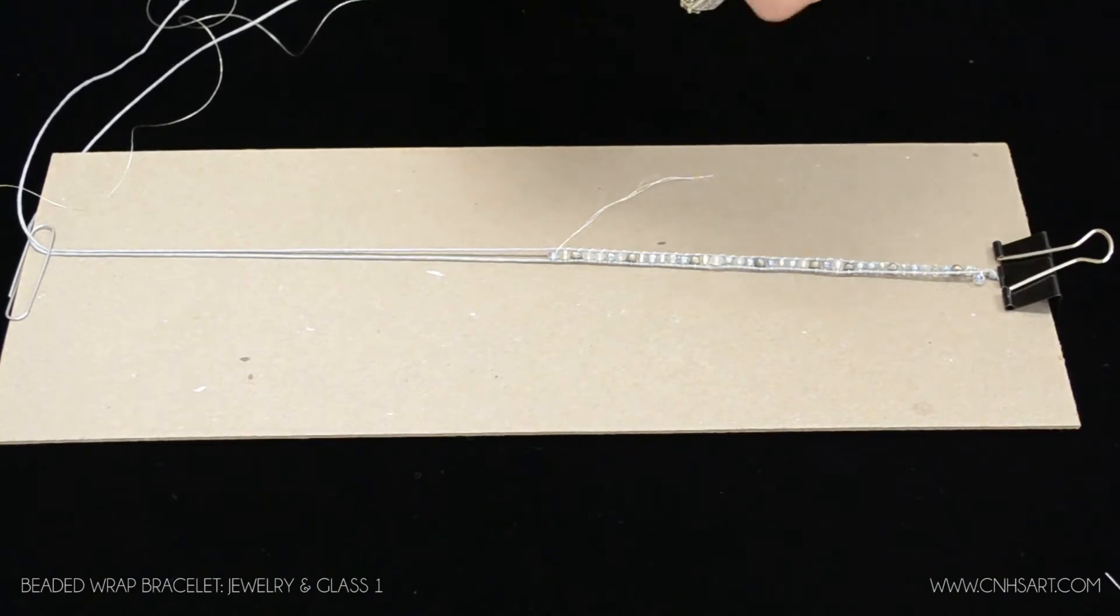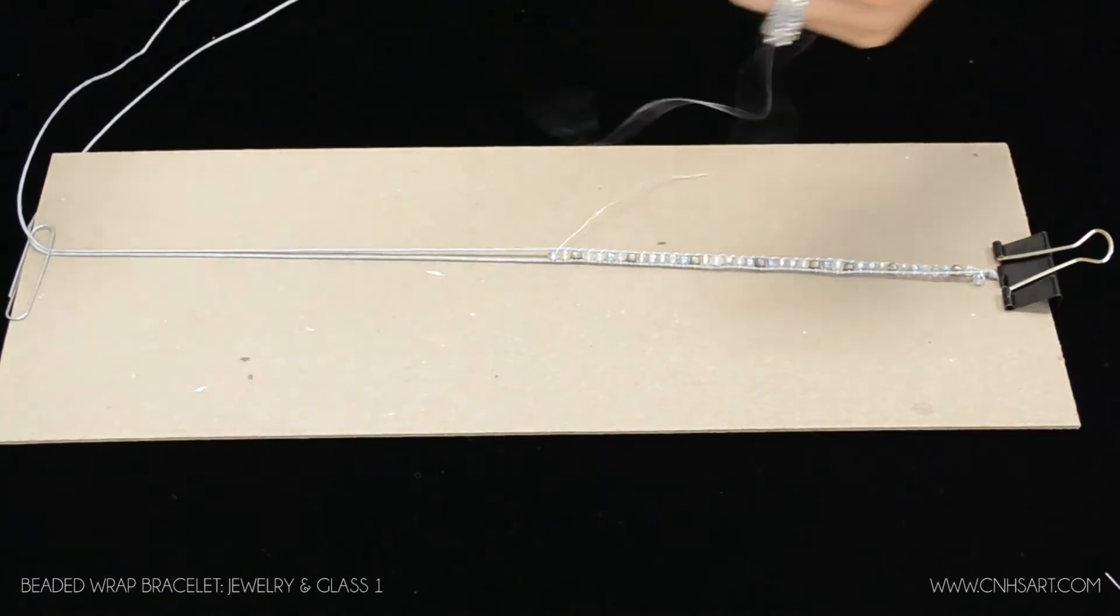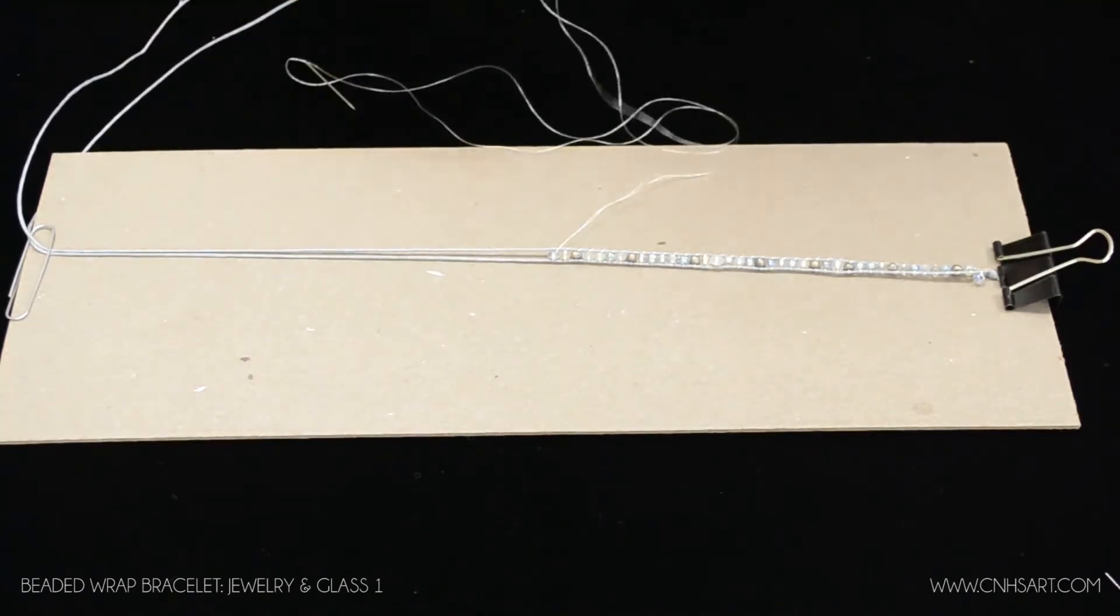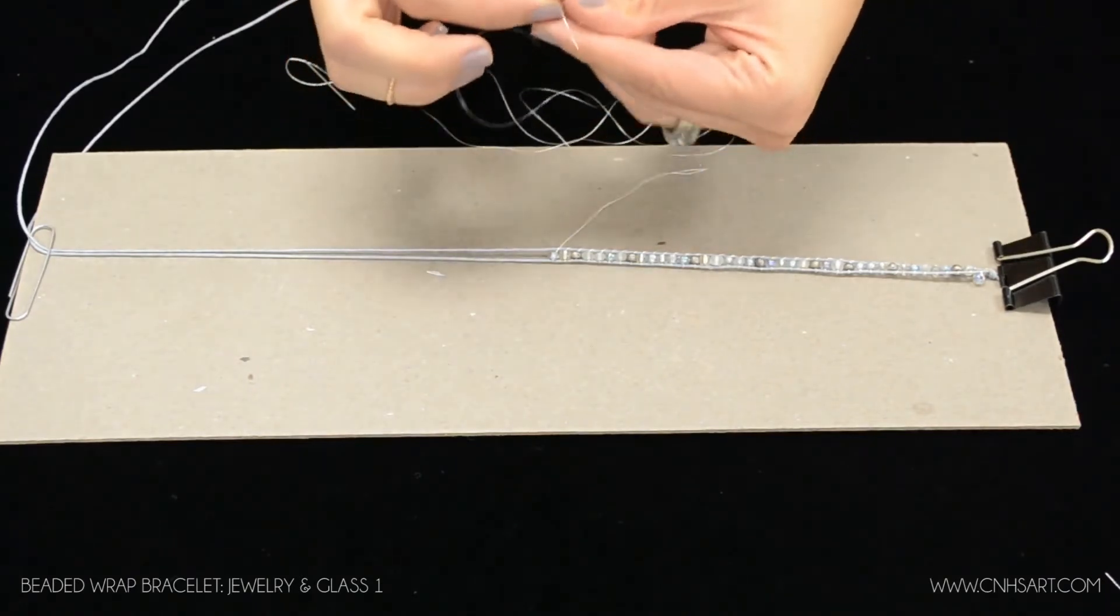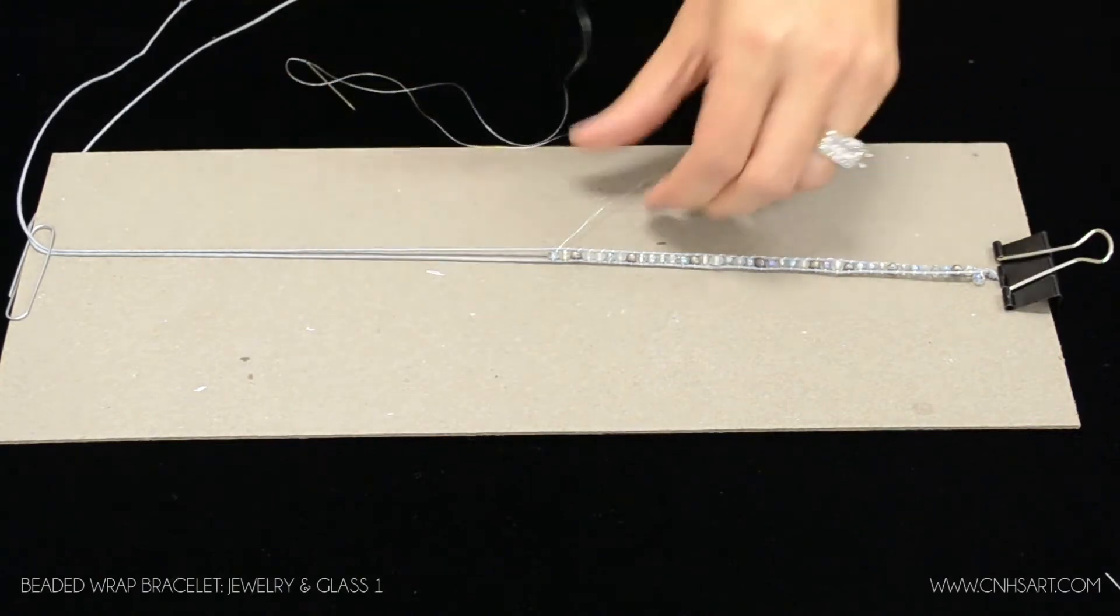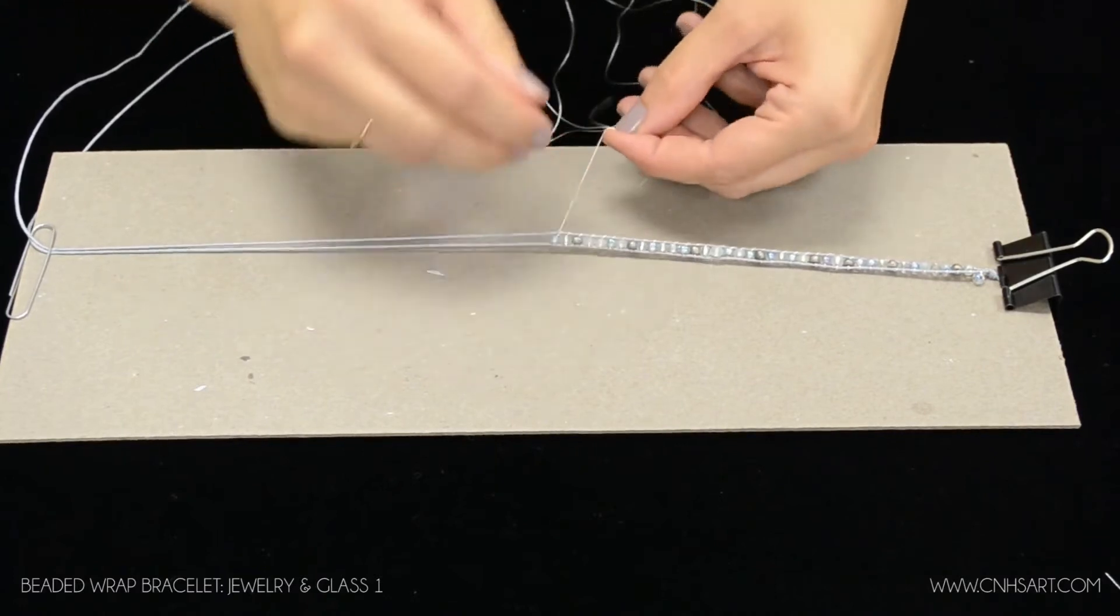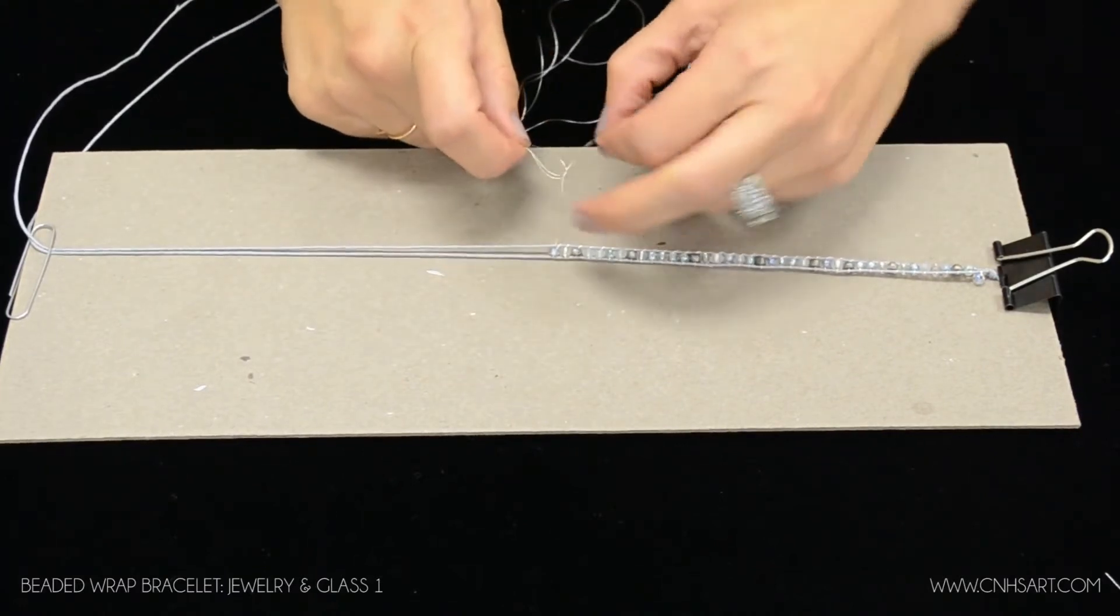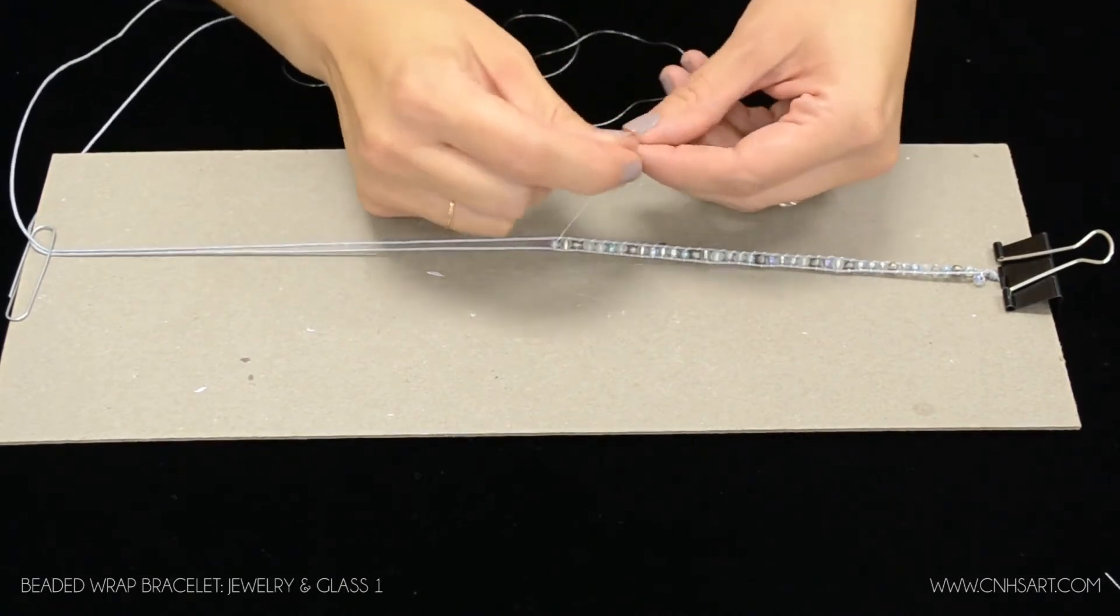Thread the needle. Again if you have a needle threader feel free to use that. When you help several hundred students do this you become pretty quick at threading a needle. So I've threaded the needle. I've gathered the two ends of the thread together. And then what I'm going to do is just tie those on to my existing thread here. And you're just going to tie that in a knot.